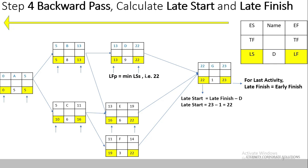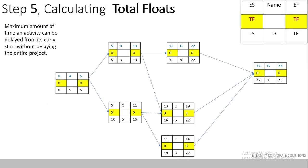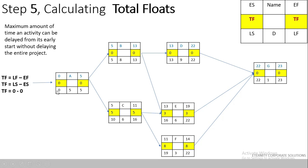In Step 5 we calculate the total float, sometimes also called slack. Total float is the maximum amount of time by which an activity can be delayed from its early start without delaying the entire project. The formula is: Total Float = Late Finish − Early Finish, or equivalently Late Start − Early Start. For Activity A, late start is 0 and early start is 0, so total float = 0. We apply this formula to all activities in the network.